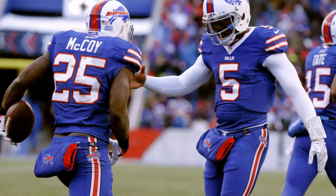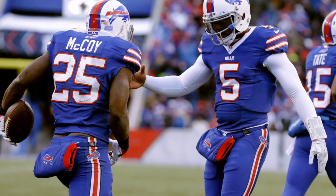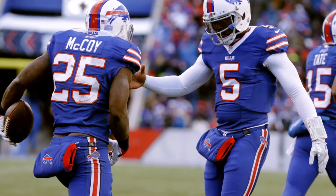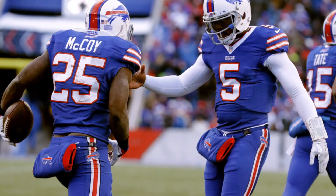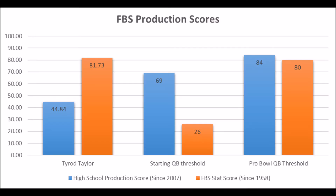Starting off with Tyrod Taylor's profile, the first place I start when it comes to any player or prospect is what their pre-draft profile looks like. When it comes to quarterbacks, the pre-draft profile consists of high school production score and FBS stat score. The high school production score deals with completion percentage plus touchdown-to-interception ratio compared to all positional peers in the era in which they played. The FBS stat score takes into account completion percentage, touchdown-to-interception ratio, and strength of schedule.